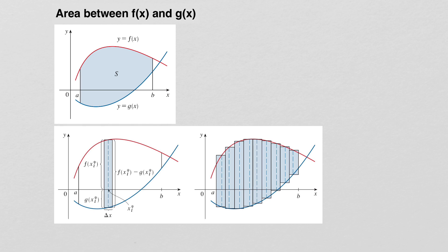We already have some experience finding areas, so this should not be terribly challenging. We're going to approximate the area under the curve by taking the interval from a to b and dividing it up into sub-intervals. Then on each of the sub-intervals we will create a rectangle to approximate the area for that particular sub-interval.